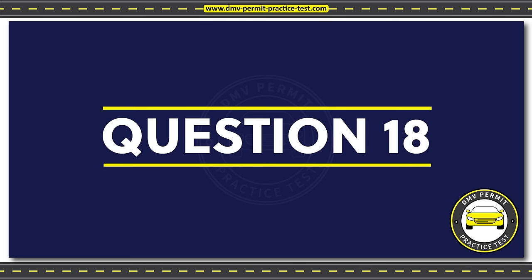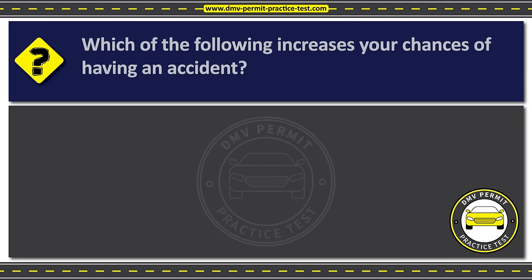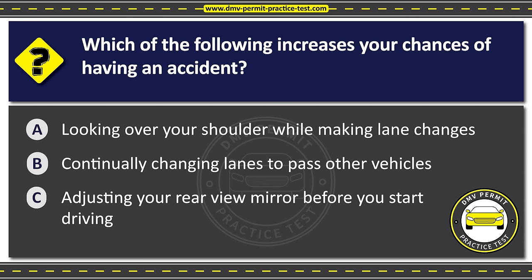Question eighteen. Which of the following increases your chances of having an accident? Option A: Looking over your shoulder while making lane changes. Option B: Continually changing lanes to pass other vehicles. Option C: Adjusting your rear view mirror before you start driving. The correct answer is Option B: Continually changing lanes to pass other vehicles.